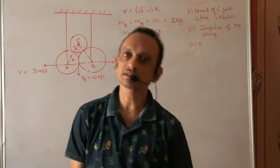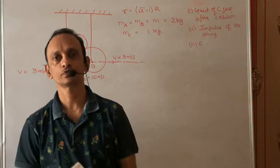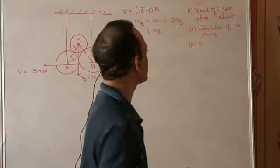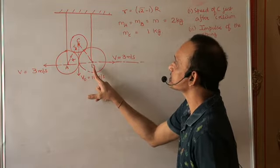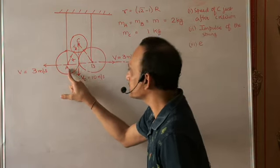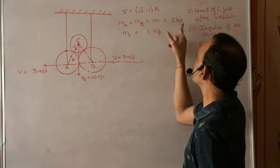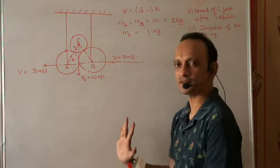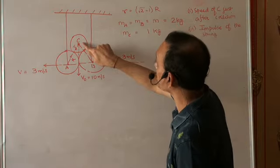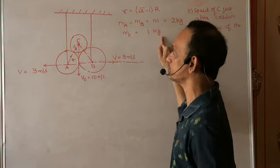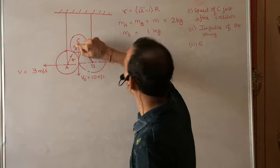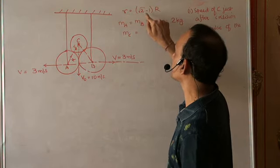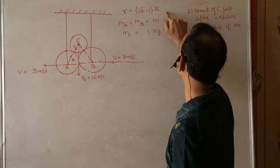Let's explore a simple situation where we are going to use impulses and impulse equations. We have two identical spheres A and B, each of mass 2 kg. We'll assume that everything involved here is smooth. There is a third sphere of mass 1 kg. The radius of this sphere is small r, the radius of A and B is capital R, and the relationship is: small r equals (√2 − 1) times capital R.